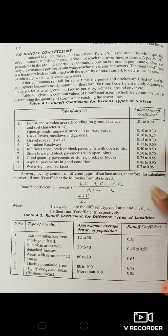The runoff coefficient C is required in the rational method. The whole quantity of rain that falls over the ground does not reach the sewer lines or the drain. The remaining portion percolates into the ground, some portion gets evaporated, and some portion is stored in ponds or ditches.